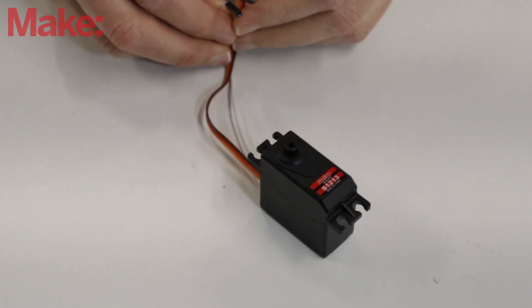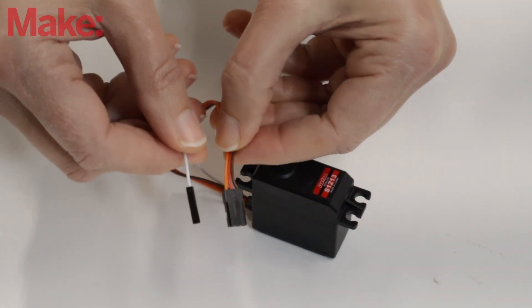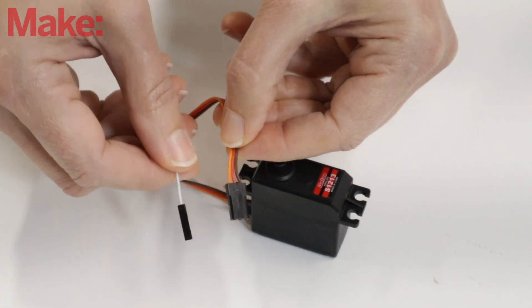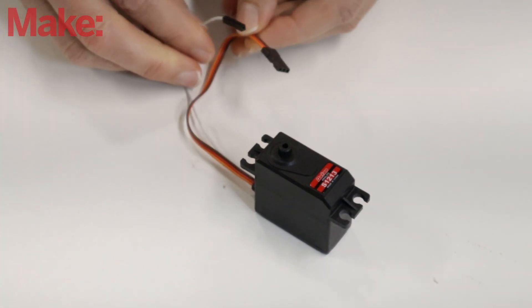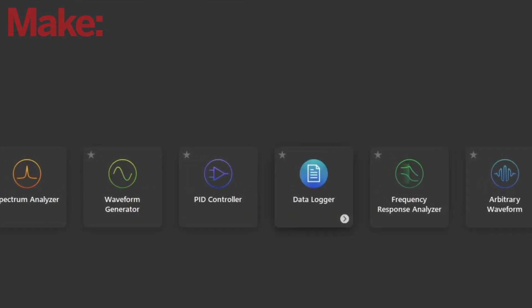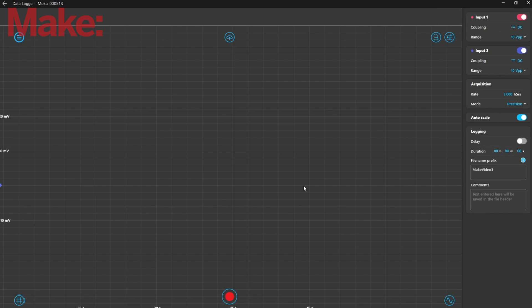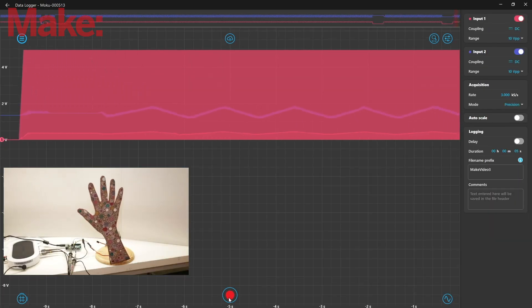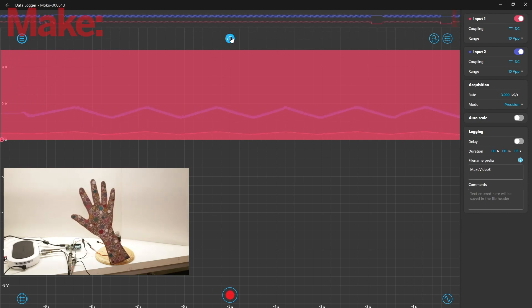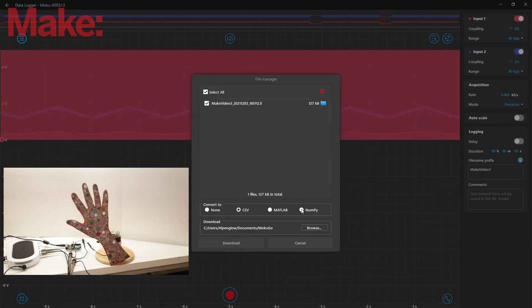This servo is a Daytan S1213 that Adafruit had custom made, and it's perfect for showing this process because it has an extra wire that outputs the voltage from the servo's internal feedback pot. We can use the data logger function on the Moku Go to monitor both the input PWM and the output voltage of the potentiometer, and now we'll be able to see the servo's output change both visually and electrically. We'll download it as a CSV to look at in a spreadsheet, but you could also download it for use with Python.